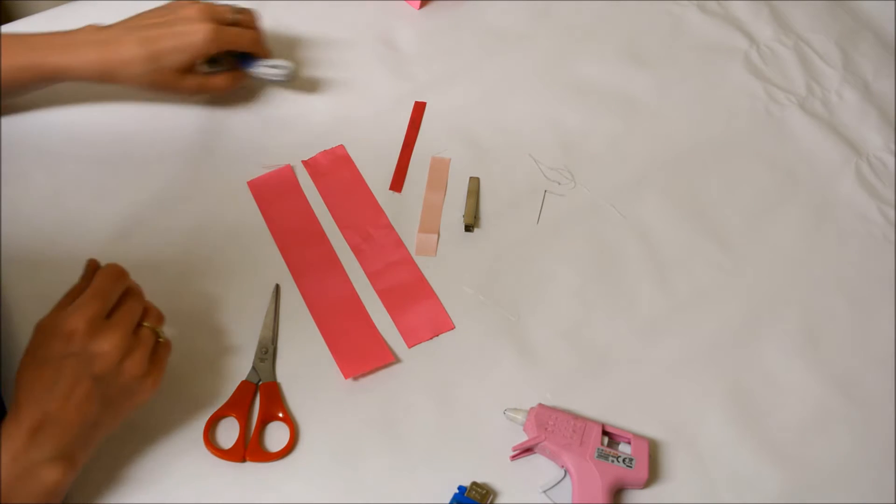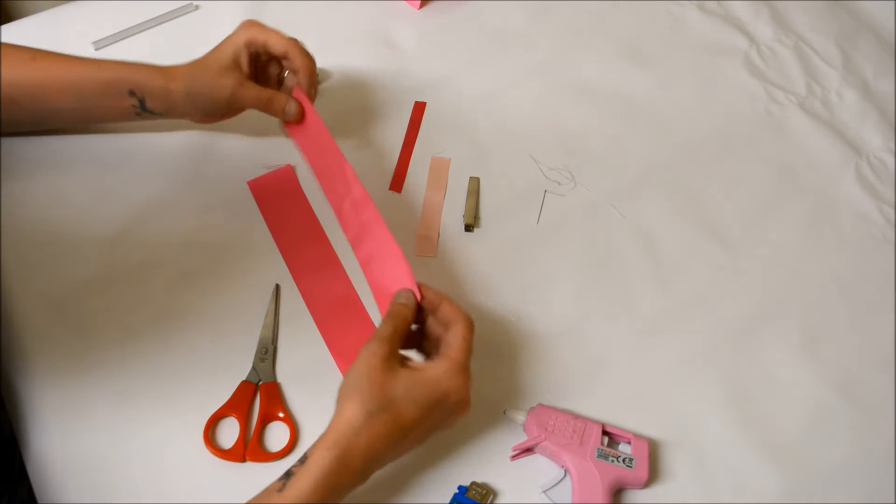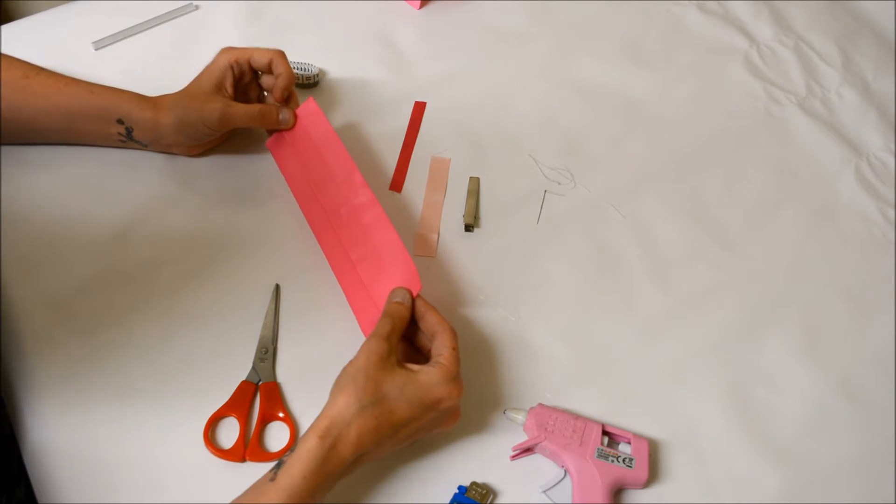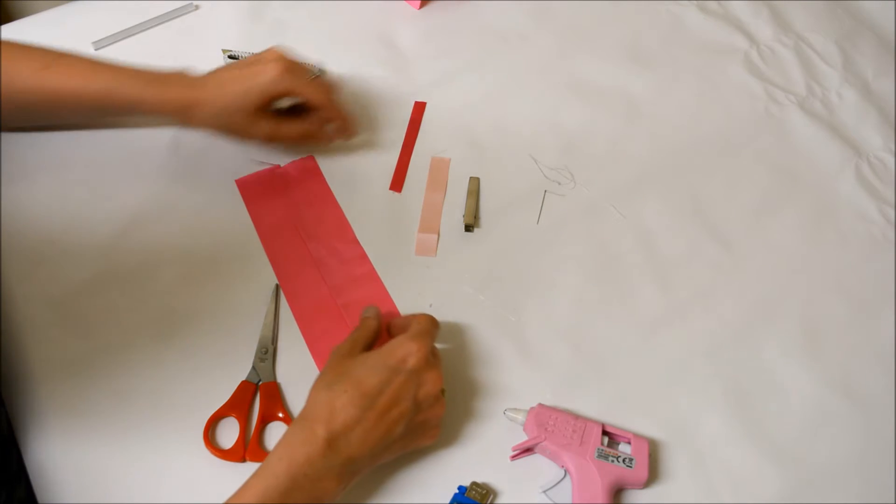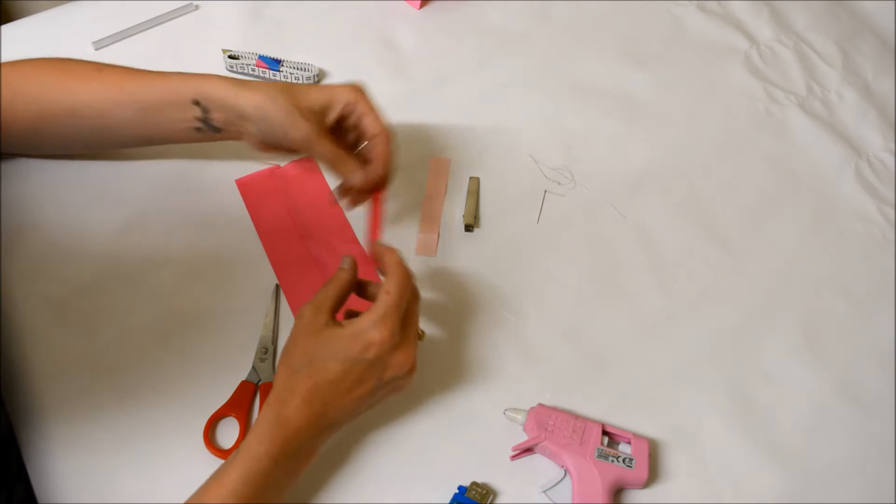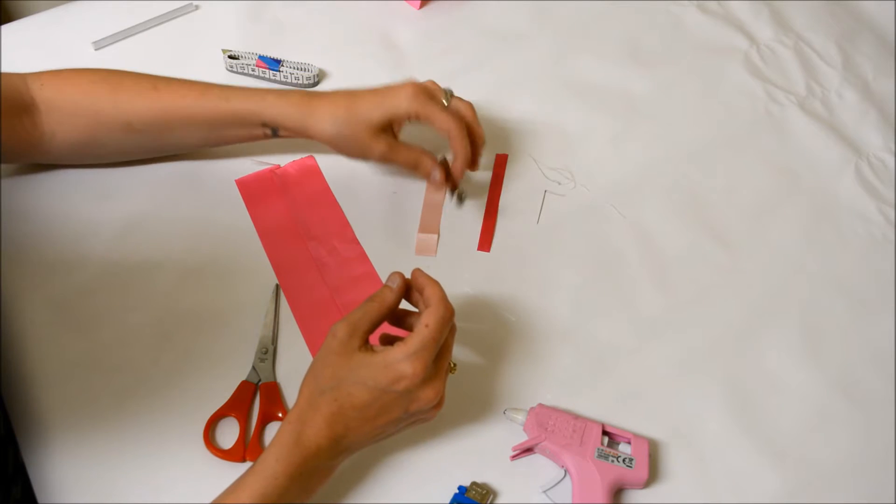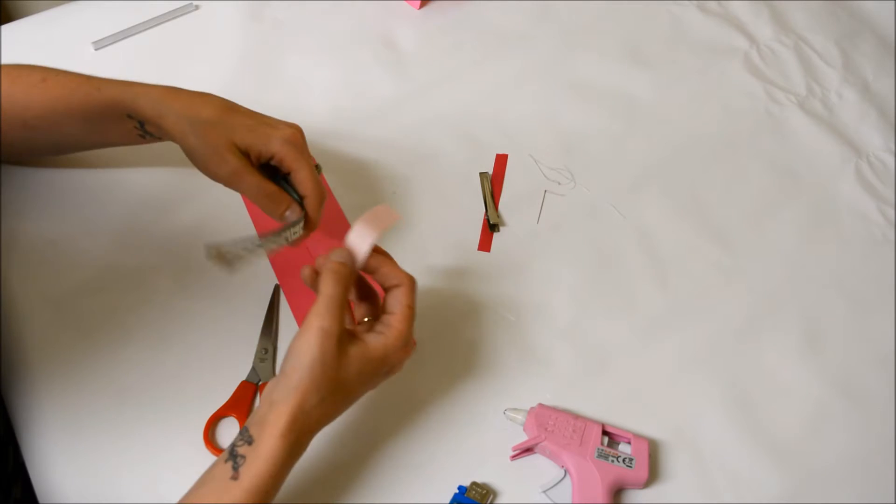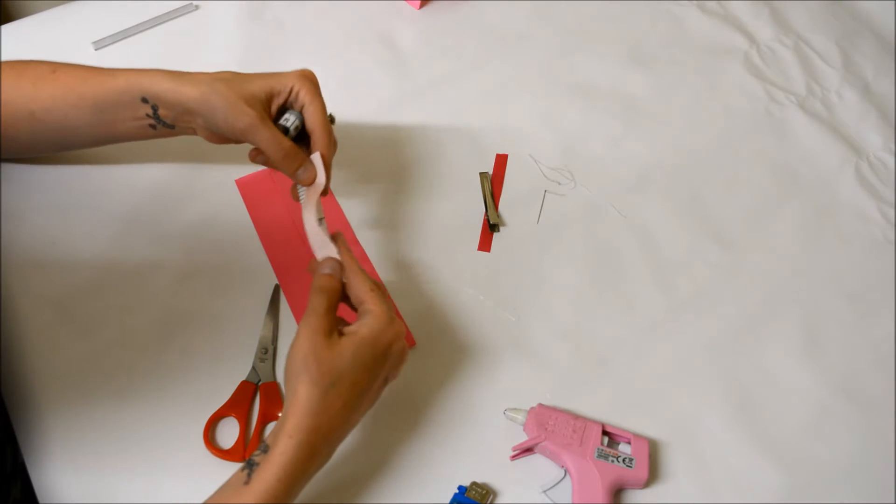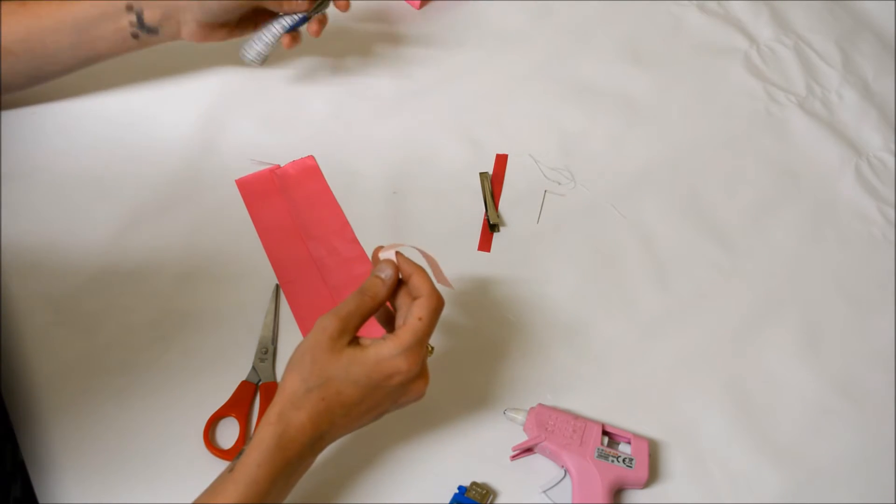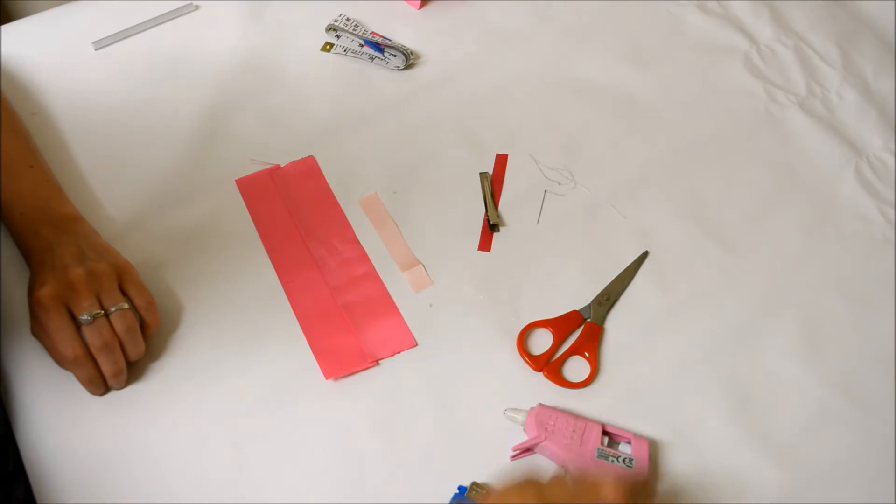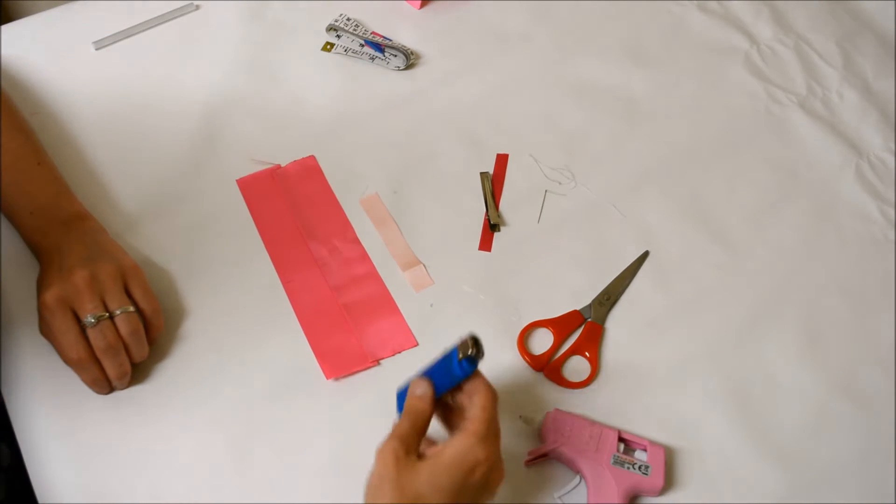For this you will need two lengths of the same ribbon. I've cut these to approximately eight inches, some ribbon to cover your clip, a clip, and a piece of ribbon to go around the center which I've cut to approximately four inches. You will also need scissors, a glue gun, and a lighter.